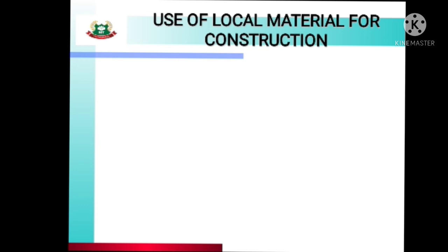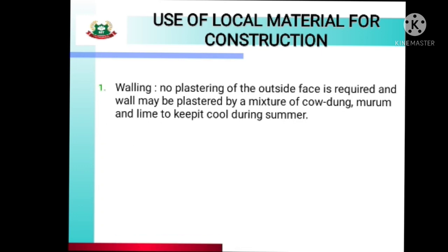Now, use of local materials for construction. For walling, no plastering of the outside face is required. The wall may be plastered using a mixture of cow dung, murum, and lime to keep it cool during summer. This mixture is durable and beneficial in both rainy season and sunlight, and is long-lasting. It can be used to plaster outer walls and helps maintain a cool inner temperature.